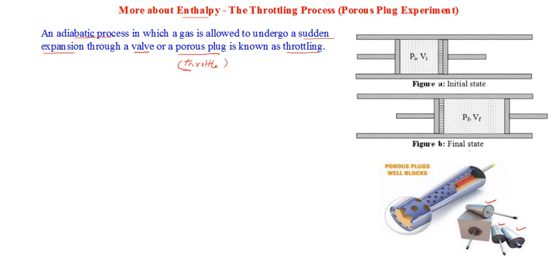The experimental arrangement is shown in Figure A and Figure B. We have an insulated cylinder — the solid lines represent the walls of the insulated cylinder — with two pistons fitted on the opposite sides of what is known as a porous plug. This schematically shows the porous plug connected between the two chambers, highlighted here in red.